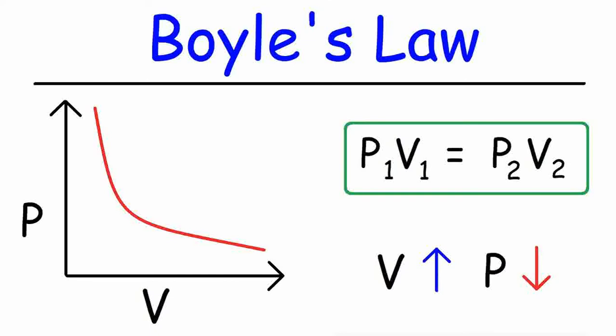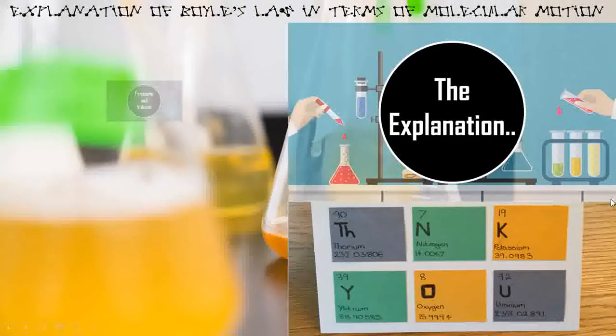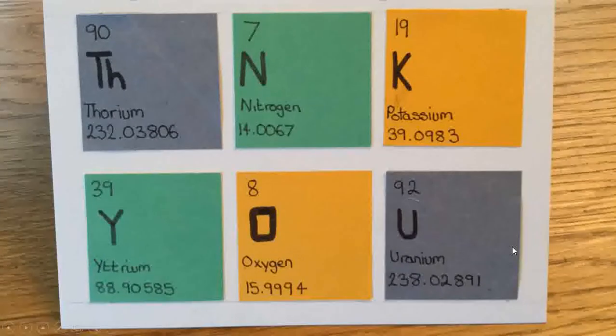This states that if the volume is reduced to half, the pressure on one unit area of the wall would be reduced to twice. And if the volume is increased to double, the pressure on one unit area of the volume would decrease by half. So, this was the explanation of Boyle's law in terms of molecular motion. Thank you.